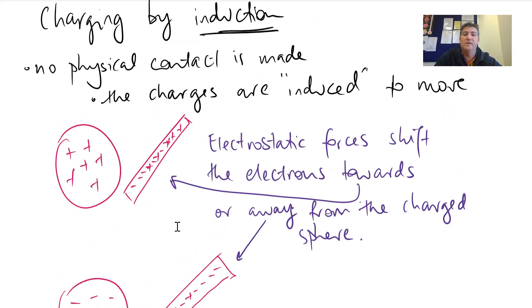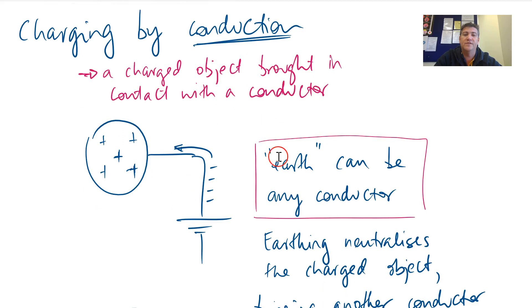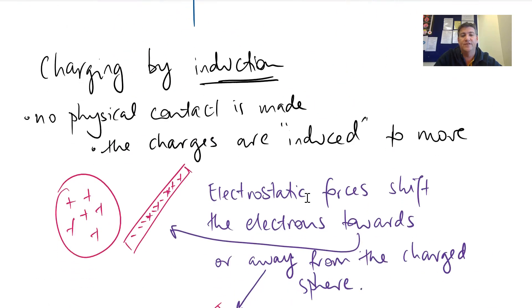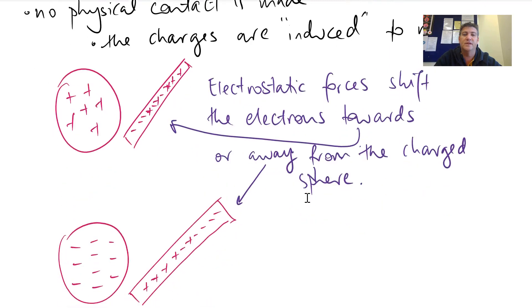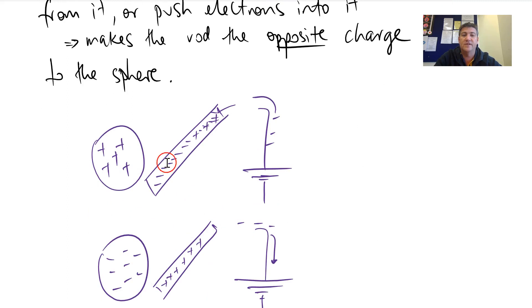So hopefully you've picked up if we conduct a charge from one place to another, we make the two objects the same. If we induce the charges to move from one place to another, we actually charge the things. There we go. We actually charge the things opposite to what our original object was.